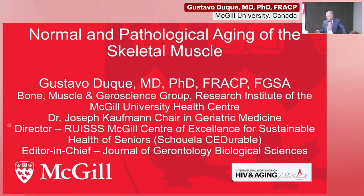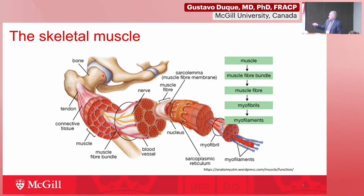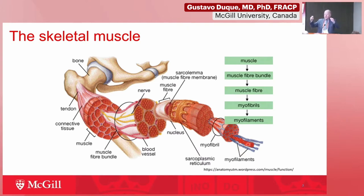Let's start. When we talk about skeletal muscle, it is a very interesting type of tissue. It goes from a complex, relatively cohesive type of tissue with connections between different cells. I'd also like to highlight bone and keep that tissue in mind because I'm going to come back to that connection between muscle and bone at the end of my talk. We have different fibers — starting with the muscle fiber bundle, then the muscle fiber, then myofibrils, and finally the myofilaments, which are the tiny structures that contract and relax all the time, facilitating our locomotion, mobility, and independence.